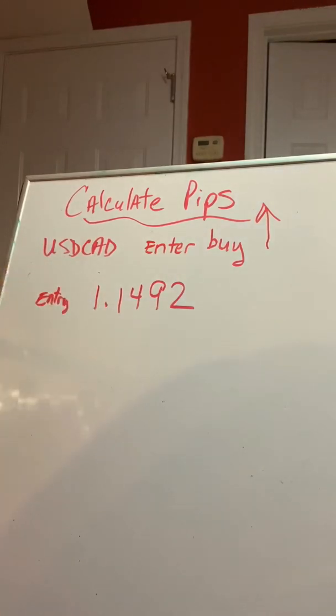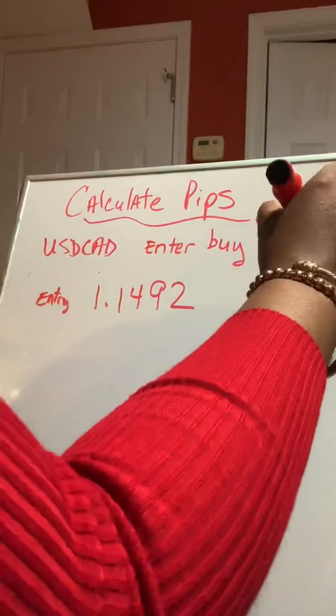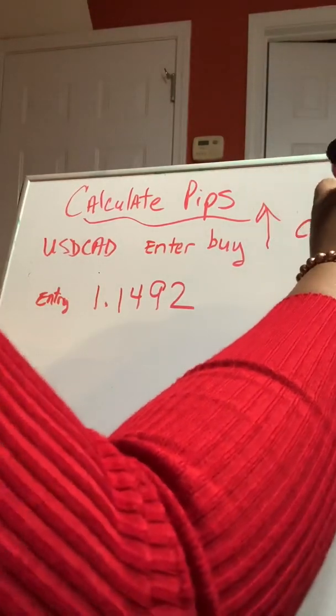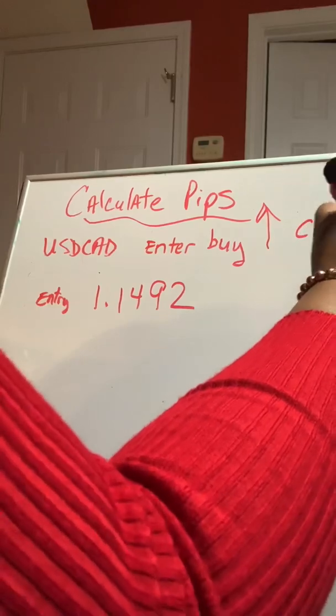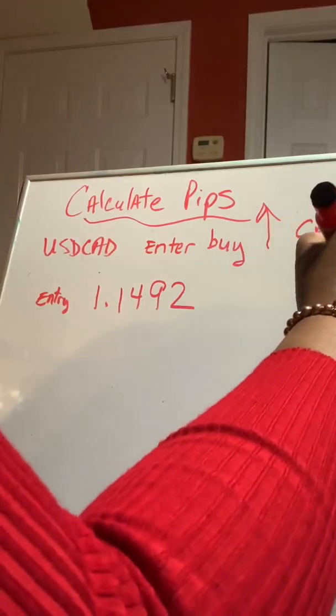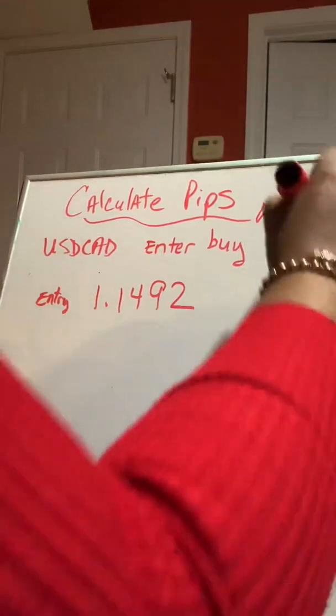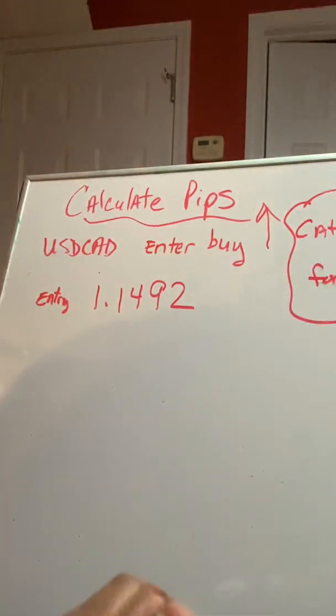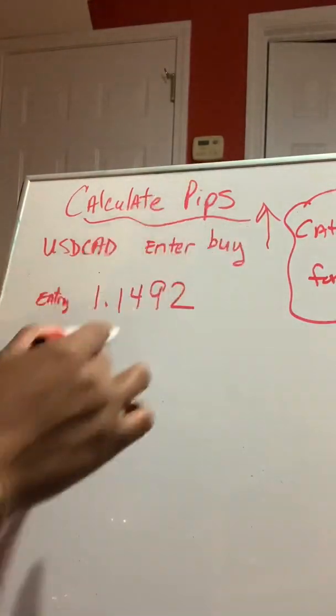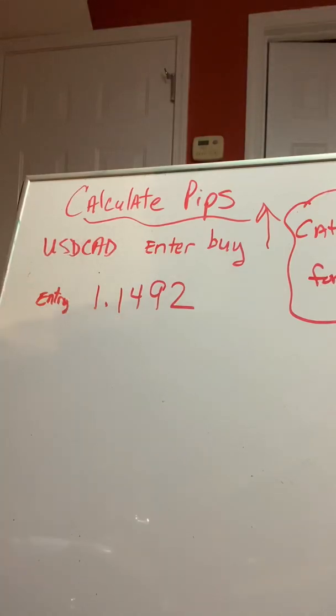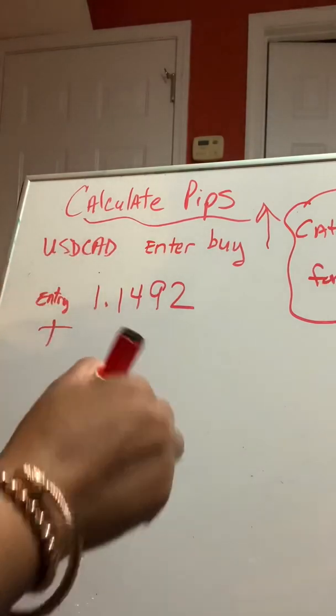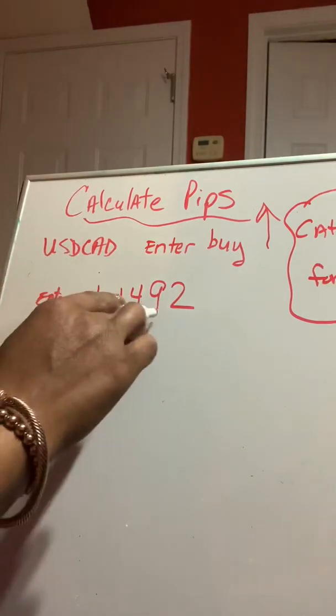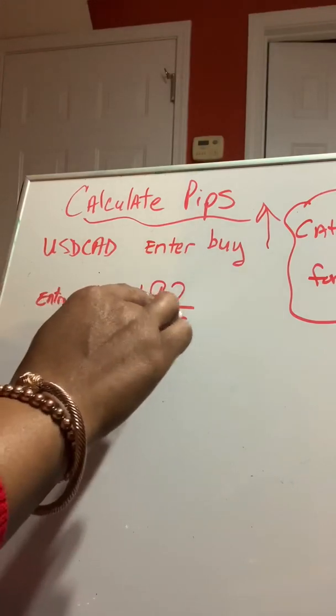Now, if we want the market to go up 10 pips, we want to catch 10 pips and take profit. Catch 10 pips for TP. Everybody knows that TP means take profit. So, we want the market to go up, so we're going to add 10. But where do I add my 10 to? Guys, if this is not a JPY pair, and of course, it's not crypto, we add the 10 to the third and fourth number after the decimal.